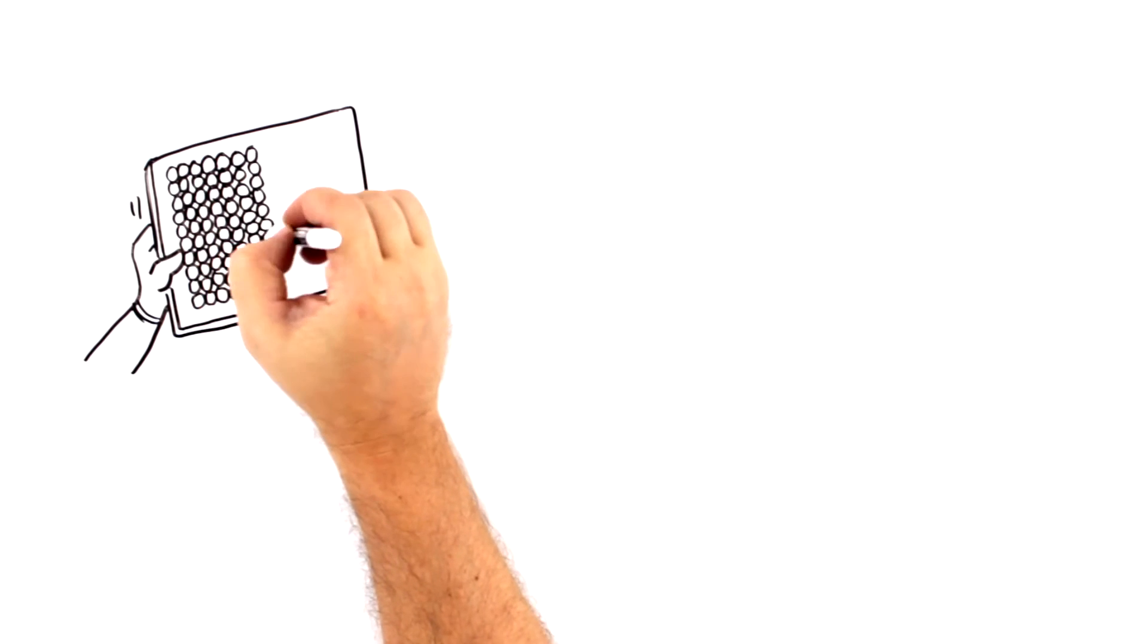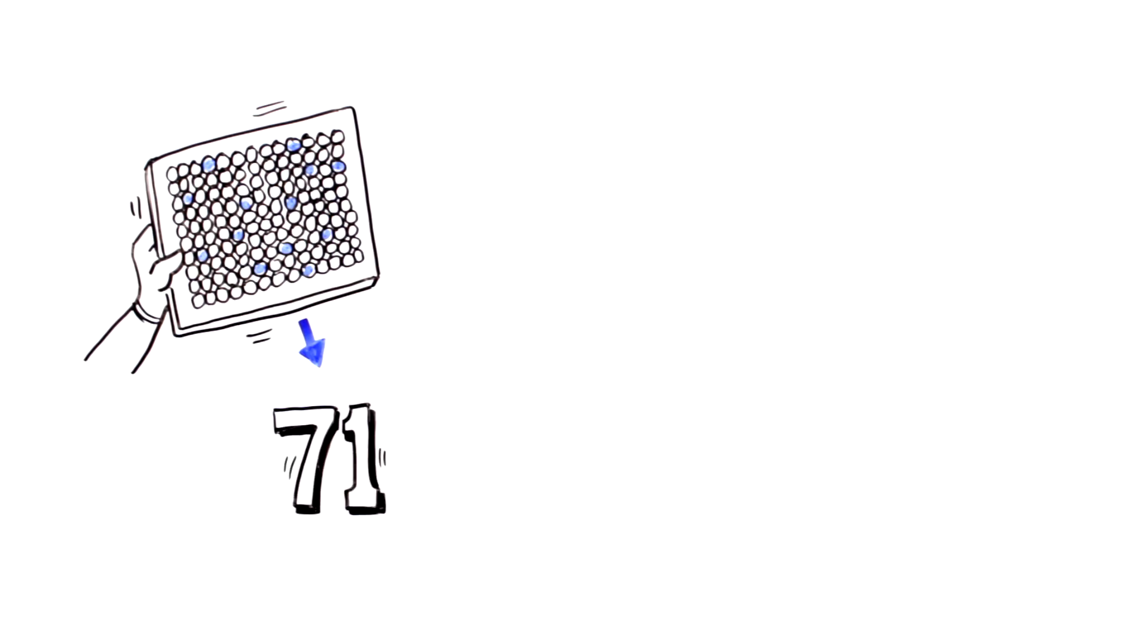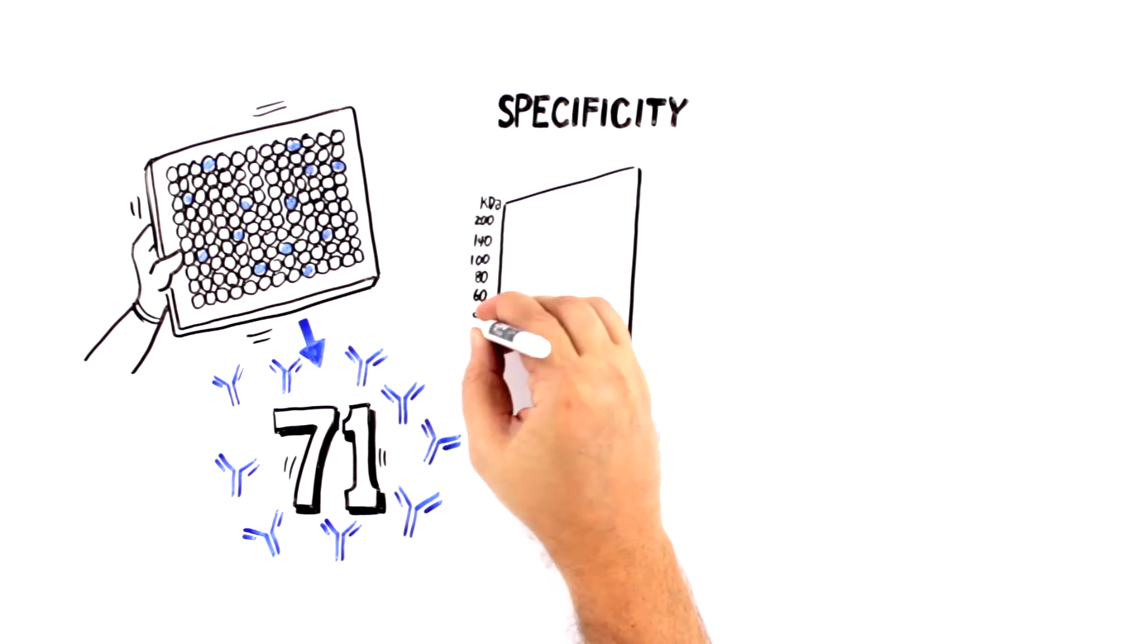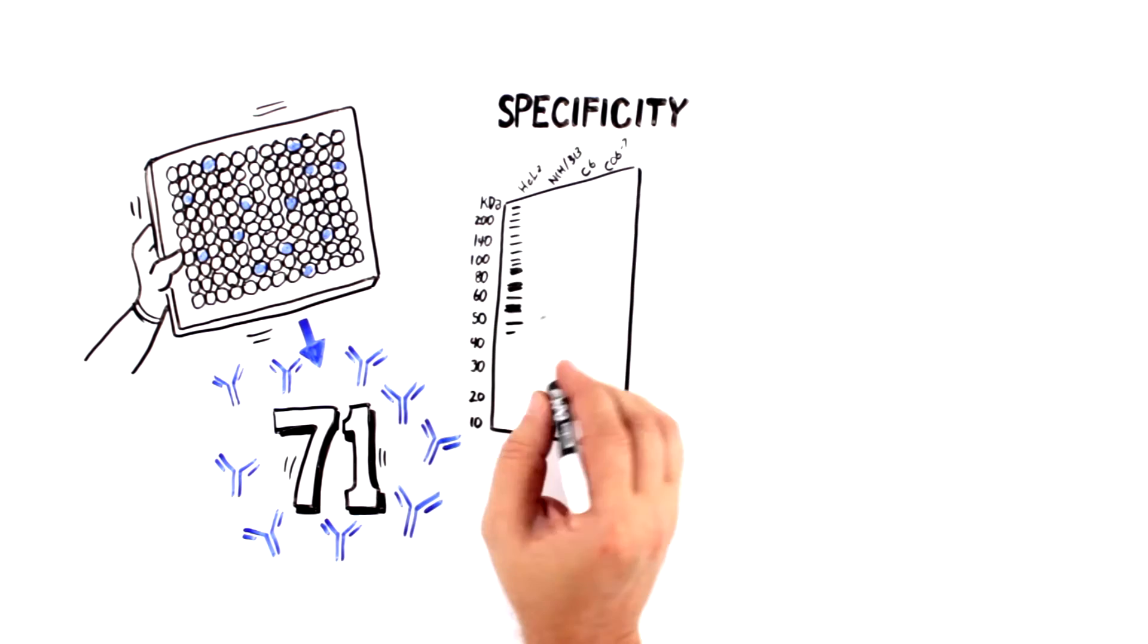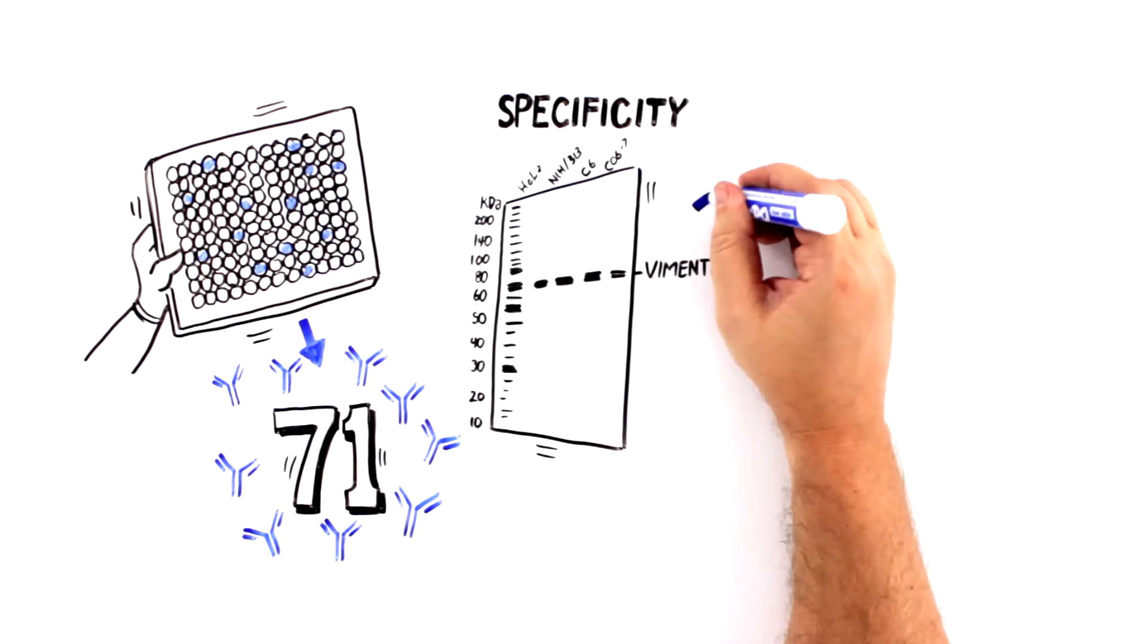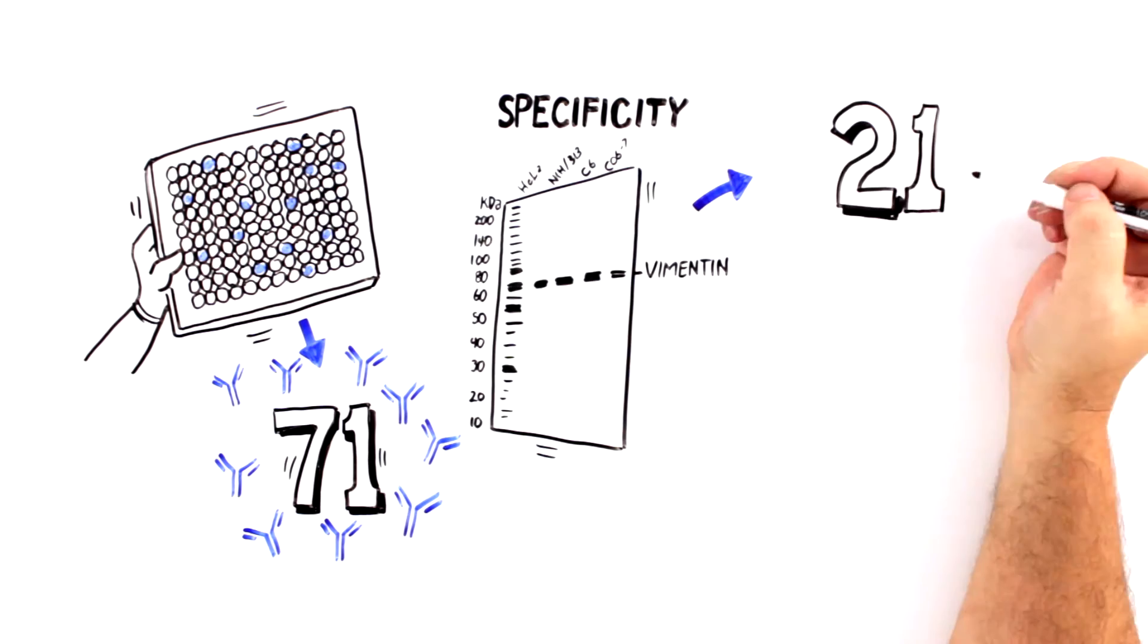After the clones were screened with ELISA, 71 looked promising, so they progressed to the next round of scrutiny, specificity. Western blotting is used in combination with positive and negative controls. This proved to be a tough test and only 21 clones made it through.